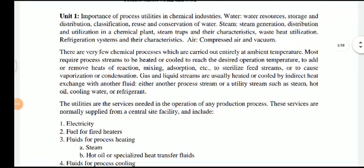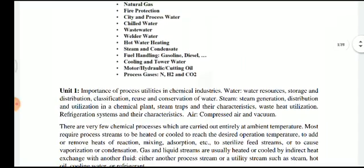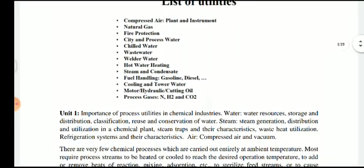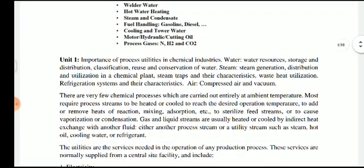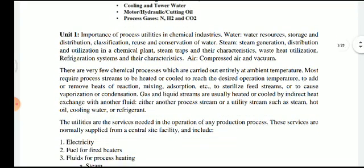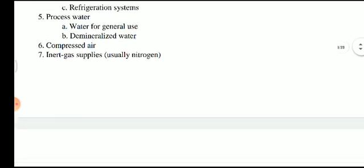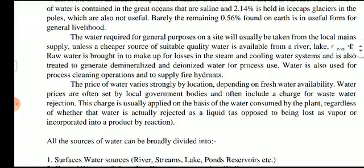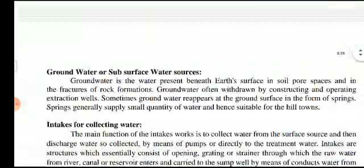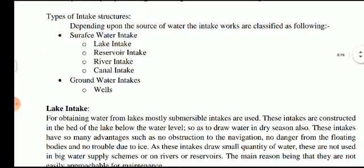Good morning. In the UNICP subject, unit number one is utilities in the chemical process industry. We discuss the utilities required in the chemical industry — water, steam, and other main utilities. We previously discussed the sources of water such as lakes, reservoirs, canals, and wells.